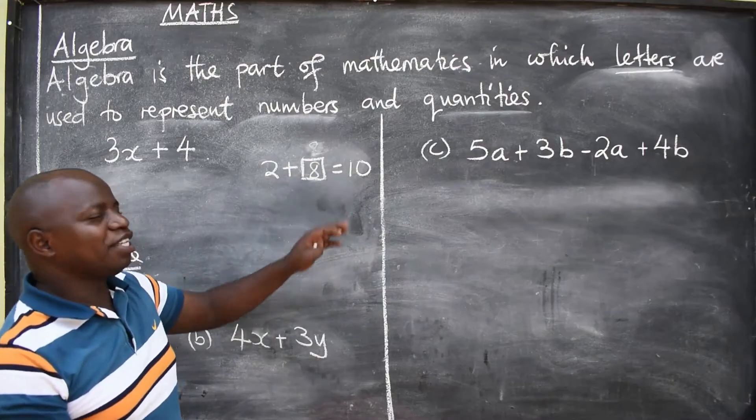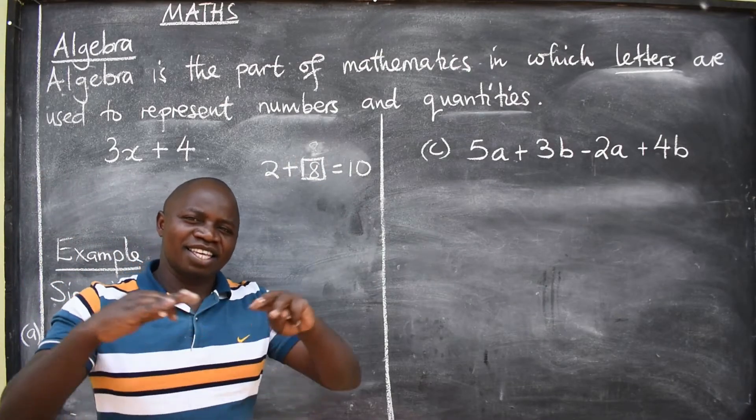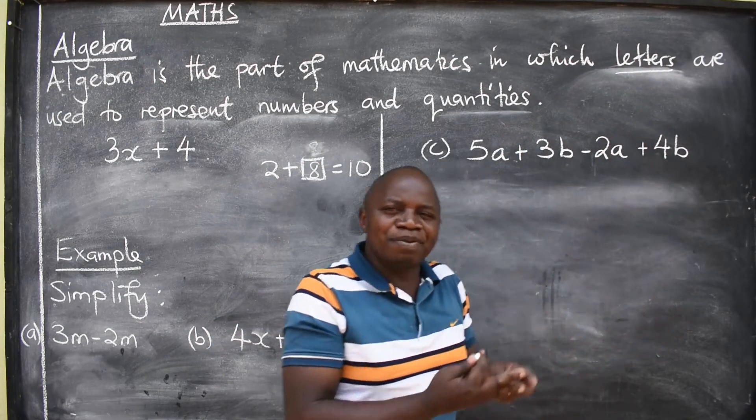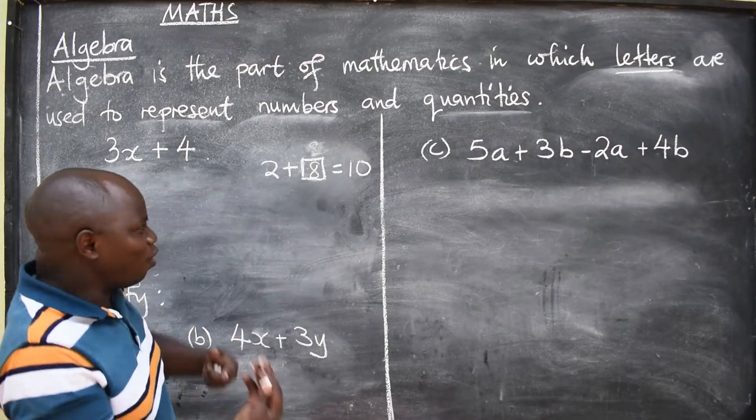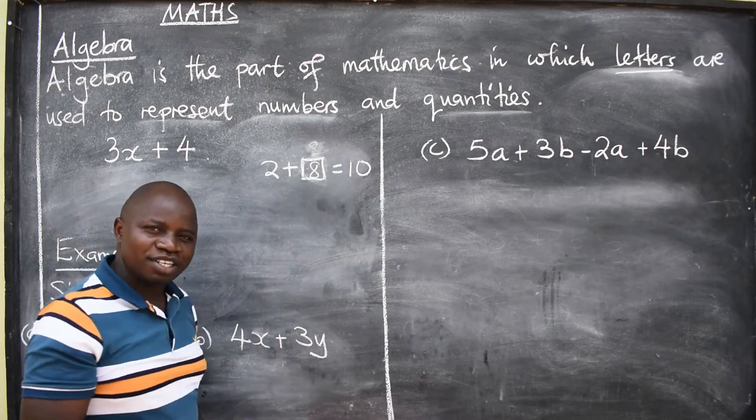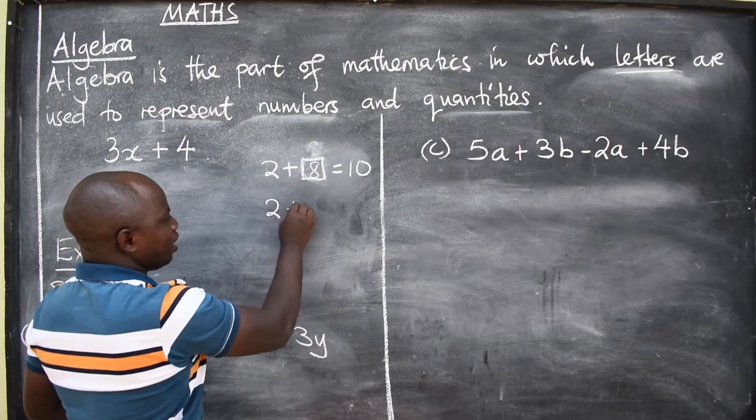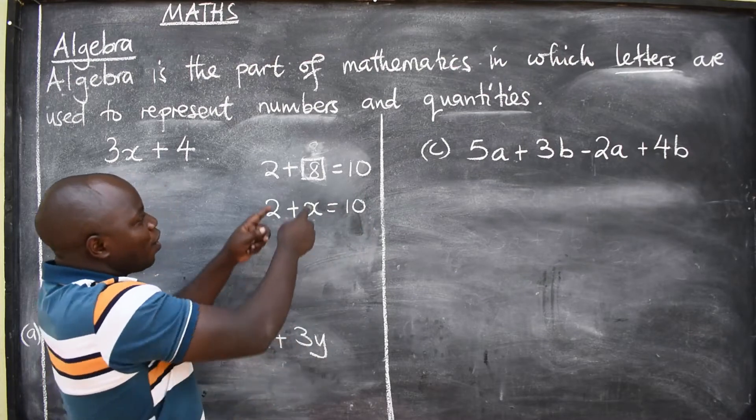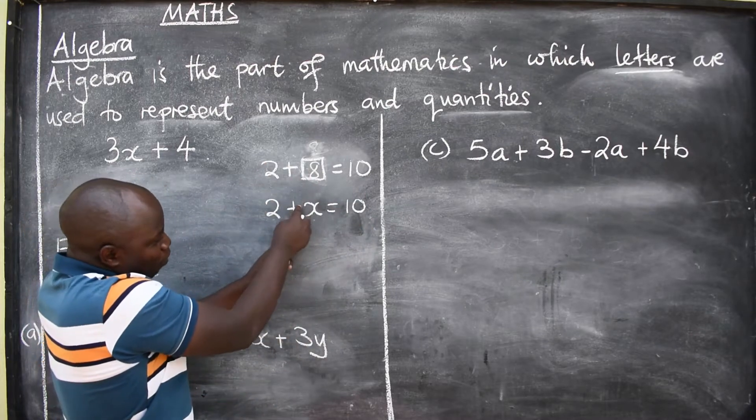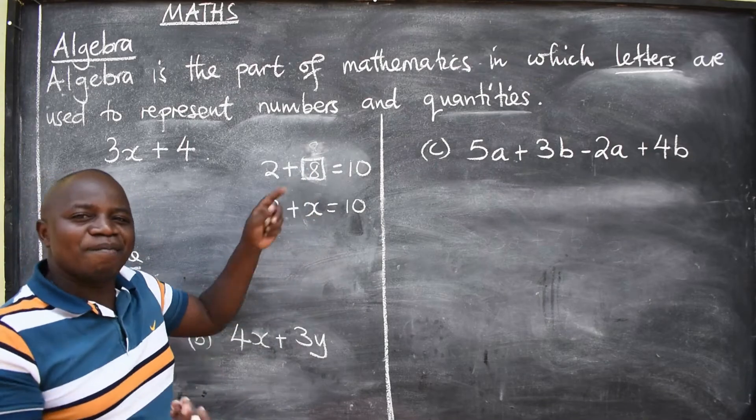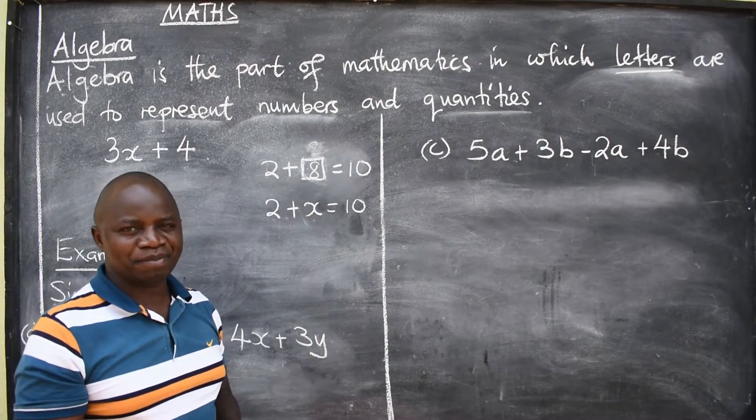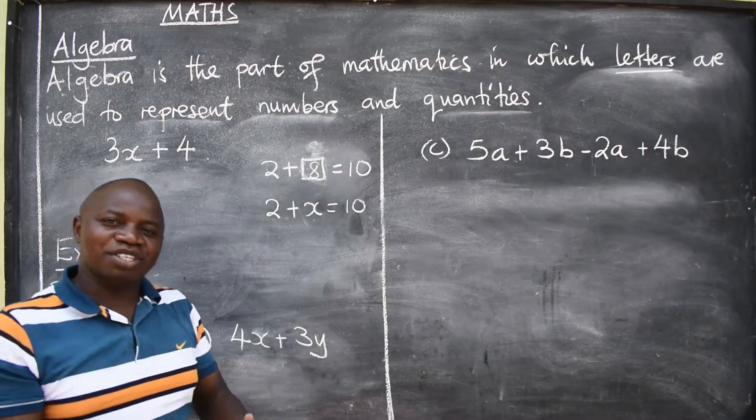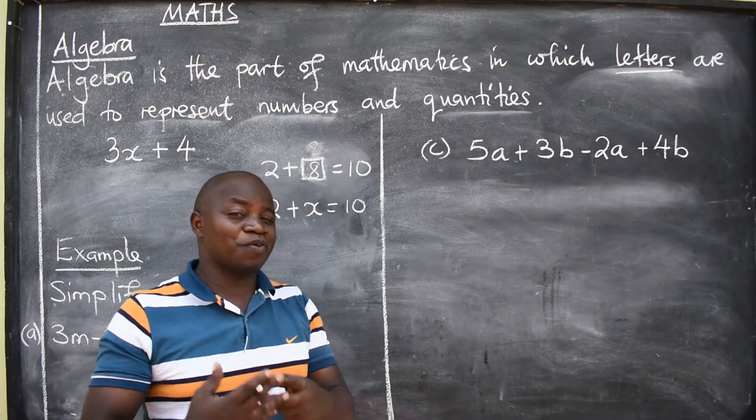Now, instead of using the box, we'll say, let's do this. Have you seen? 2 plus x is equal to 10. So we are saying we are using letters to represent numbers and quantities. So this was some of the equations that we encountered during that time. I hope we are following.